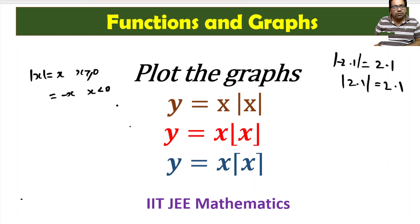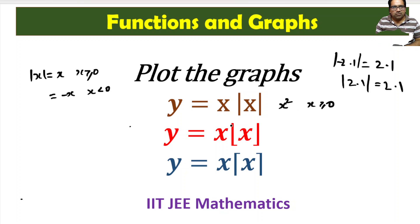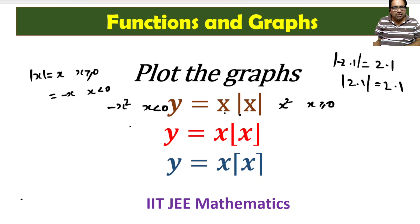So this graph we can split into two parts. When x is greater than or equal to 0, mod x equals x, so the graph becomes x squared. When x is less than or equal to 0, this becomes x times minus x, so it becomes minus x squared when x is less than 0.